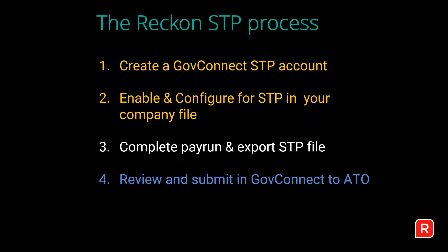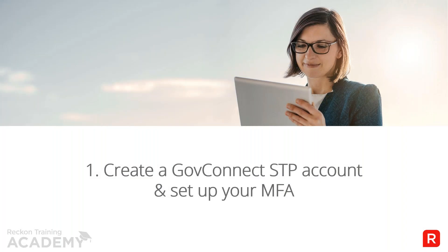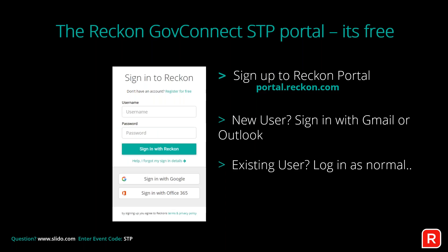The first step is creating a GovConnect STP account and setting up your MFA — multi-factor authentication. To sign up, go to portal.reckon.com. New users can sign in using a Gmail or Microsoft email address for single sign-on, or click 'Register for Free' to nominate an email address for the Reckon portal.